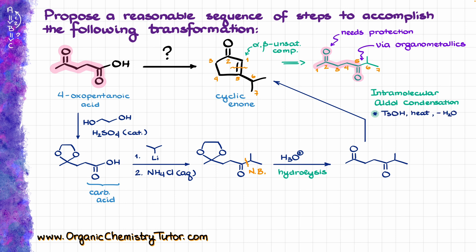There are a couple of ways you can do the aldol condensation. You can do it in acidic conditions using acid as a catalyst plus heat and remove water from the reaction, or in basic conditions using sodium hydroxide or another base as a catalyst. You could also use a mixed method where you start from basic conditions and then switch to acidic conditions midway. Whichever method of aldol condensation you like, that one is going to work here just fine, and that's how we make our final product.